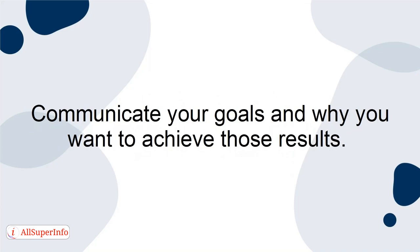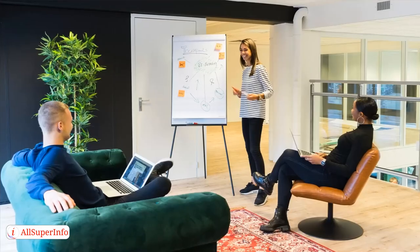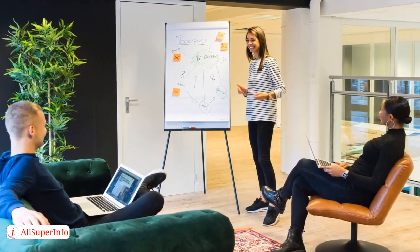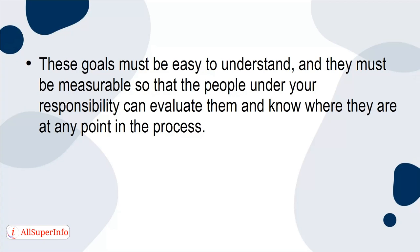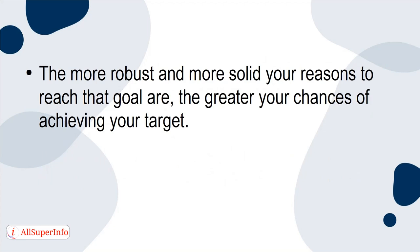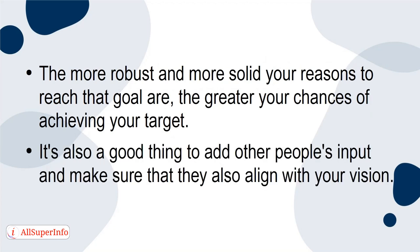Communicate your goals and why you want to achieve those results. If you want people to help you with your goals and vision, you need to know where you want to go. These goals must be easy to understand and measurable so that the people under your responsibility can evaluate them and know where they are at any point in the process. Once you have made your goals known, you need to identify and communicate why you want to achieve them. The more robust and solid your reasoning, the greater your chances of achieving your target. It's also good to add other people's input and make sure they align with your vision.